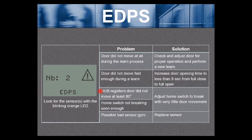Next most common error is the hub registers the door did not move at least 80 degrees. You need to adjust the home switch to break with very little door movement. I'll speak more on that in just a second.